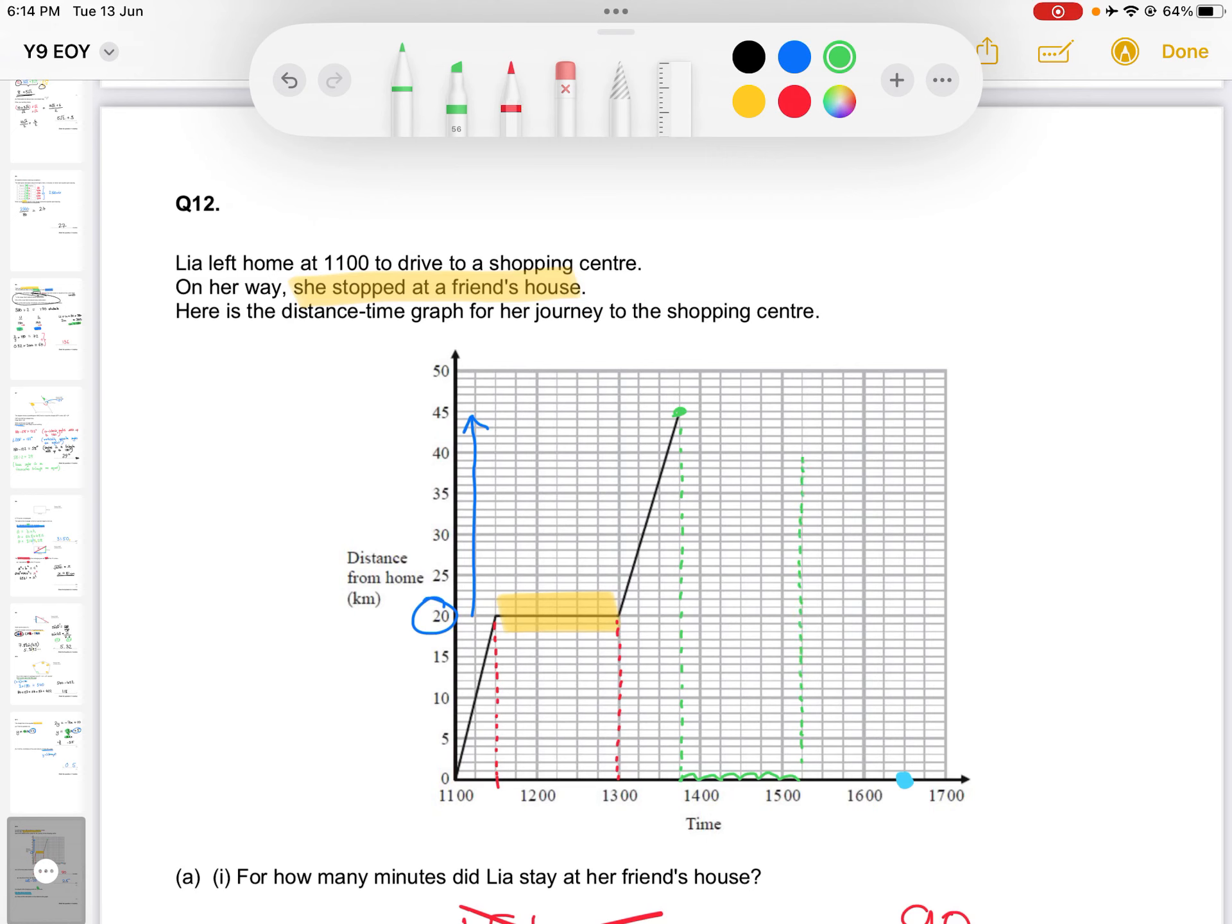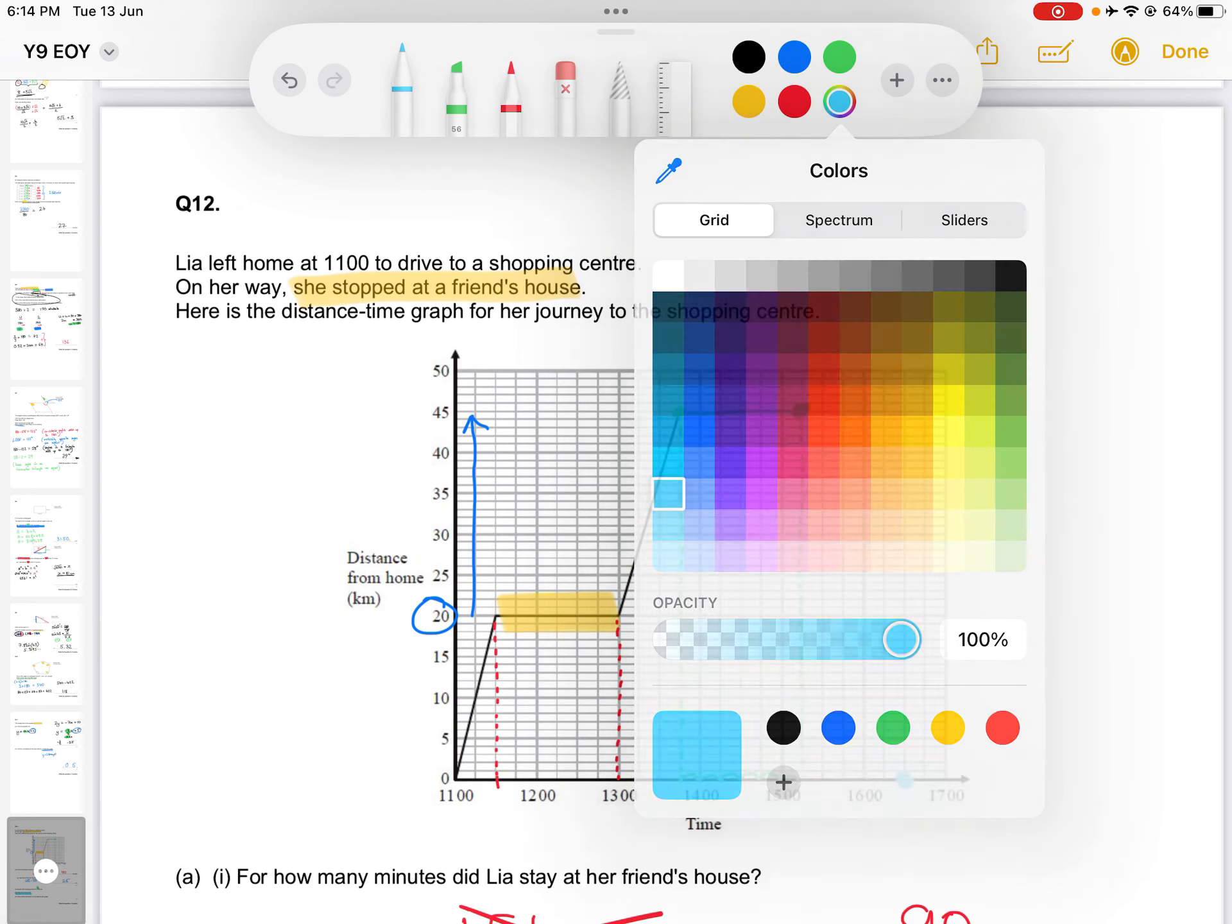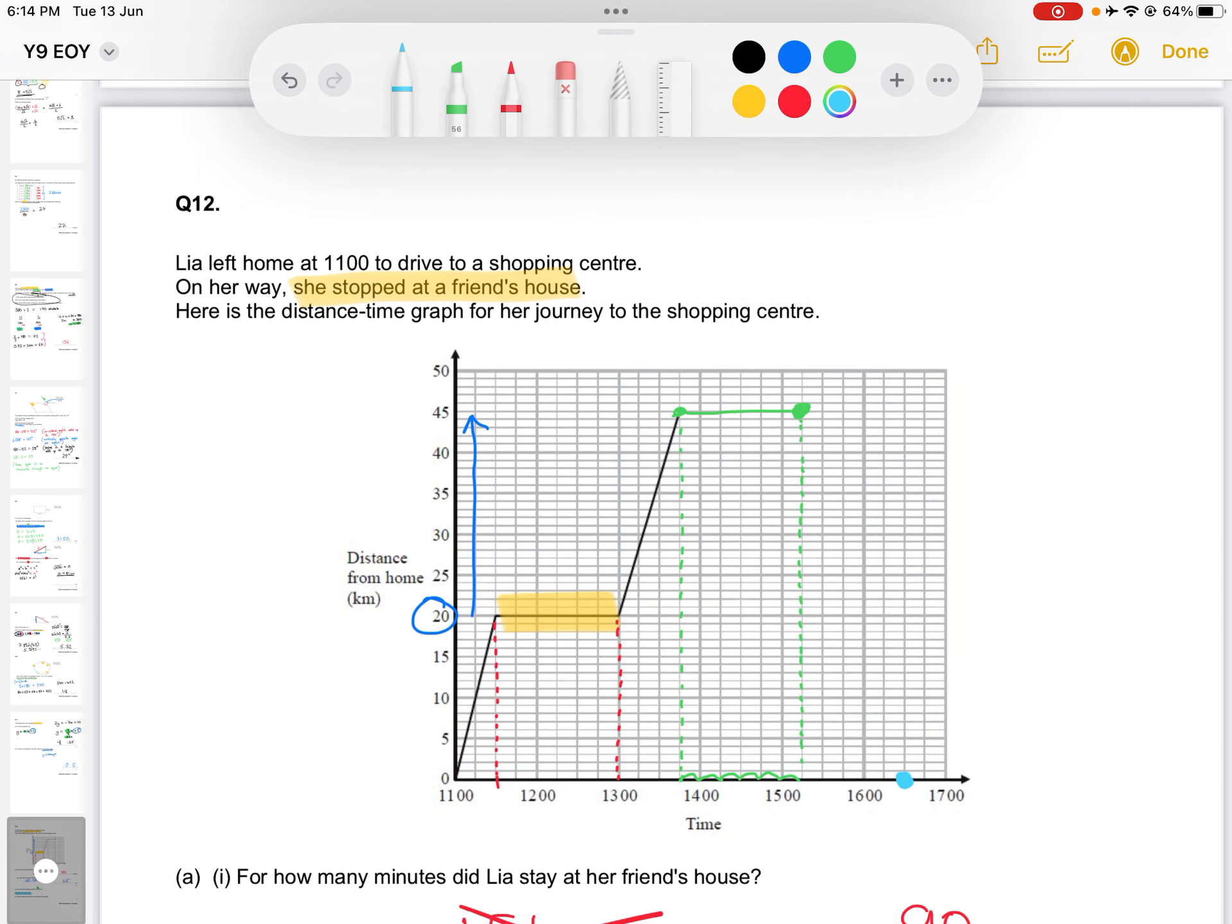Which means that when we leave the shopping center, or I should say when Leah leaves the shopping center, is here. So we have this horizontal line connecting the two of them, and after that, we have a straight line that connects here to here. And that is our completed distance-time graph. Done.